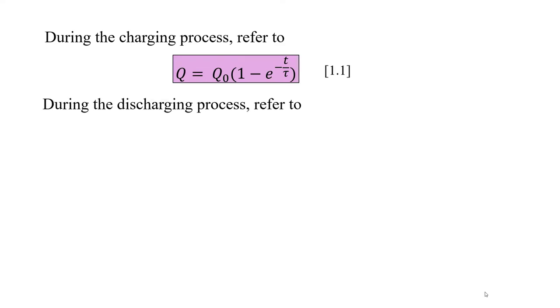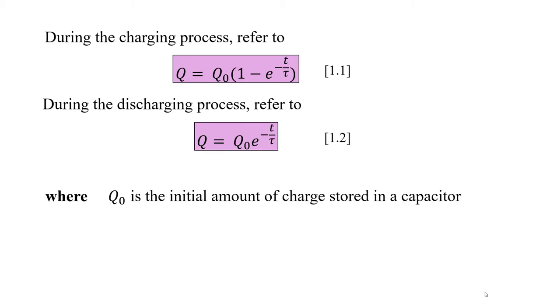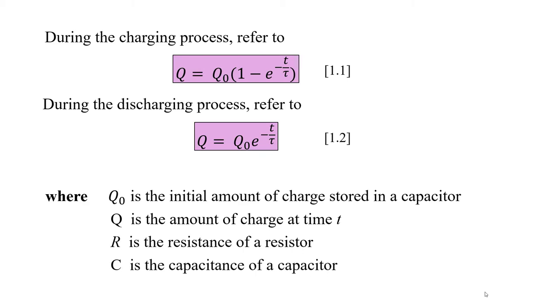During the charging process, refer to equation 1.1, where Q0 is the initial amount of charge stored in a capacitor, Q is the amount of charge at time T, R is the resistance of a resistor, C is the capacitance of a capacitor, and tau equals to RC is the time constant.